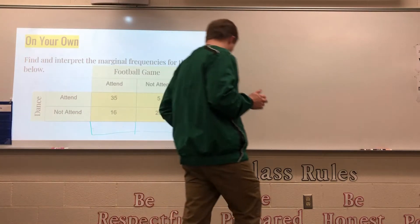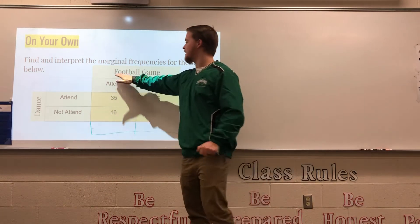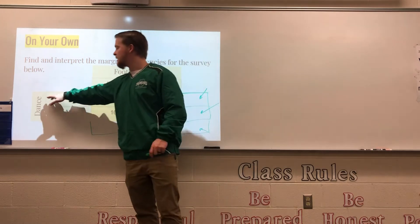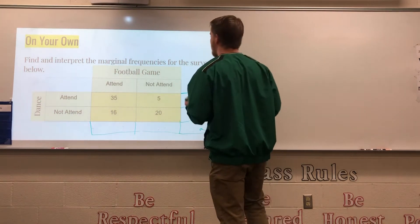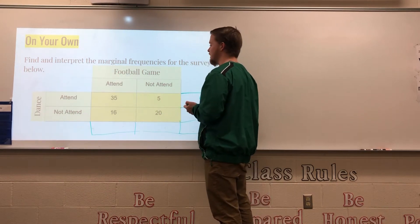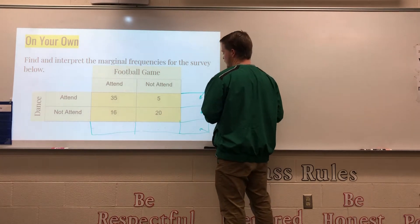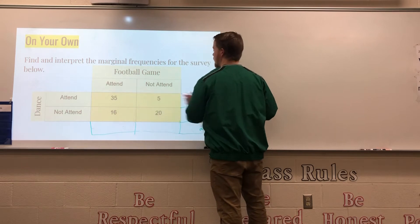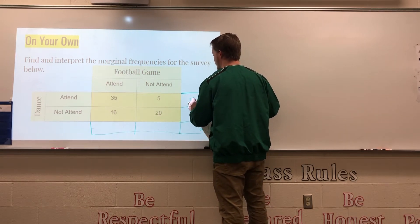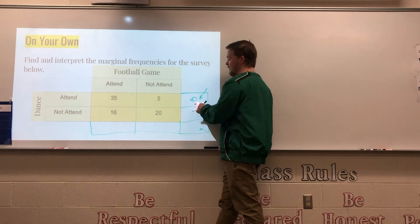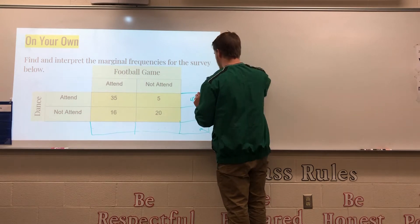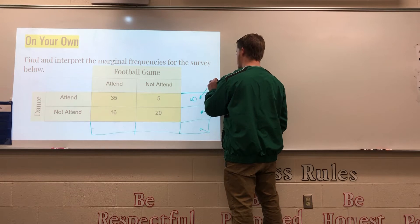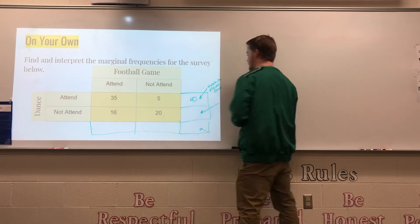Hopefully you paused the video and tried it. This data set talks about a football game and a dance — whether students attended or not. Let's find our marginal frequencies. The first one is 35 plus 5, which equals 40. If we go all the way over, 40 represents students who attended the dance.